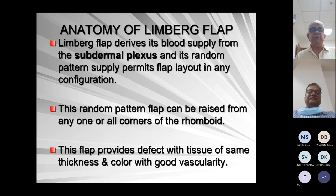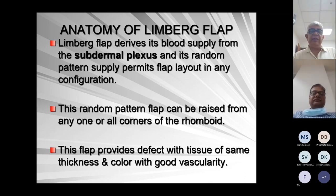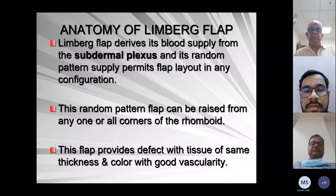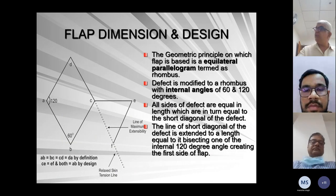From the anatomy of the Limberg flap: it derives blood supply from the subdermal plexus, and its random pattern supply allows the flap to be laid out in any configuration. The random pattern flap can be raised from any one or all the corners of the rhombus. This flap provides tissue of good thickness, color, and good vasculature.